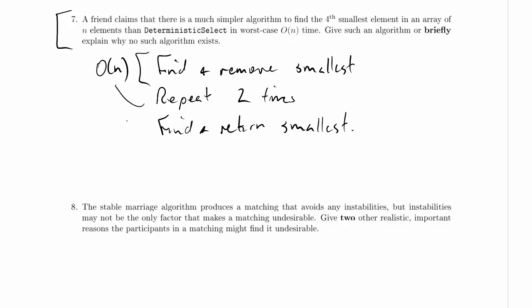Repeat two times, well that's still O of n time. Now we're up to 3 O of n time. And find and return the smallest, that's O of n time. Now we're up to 4 O of n time. And overall then this is just going to take linear time. So yes, that is pretty simple.